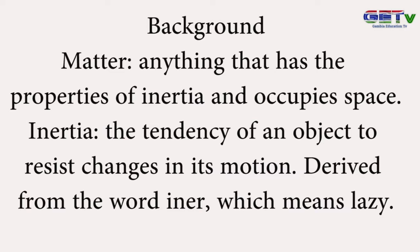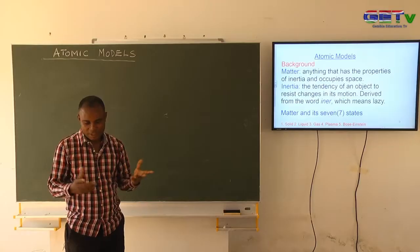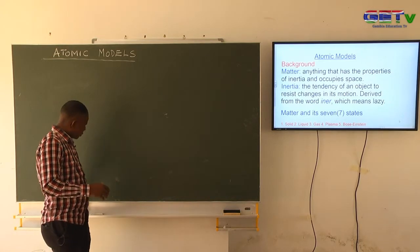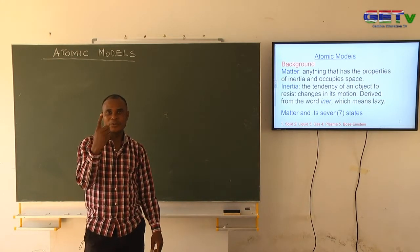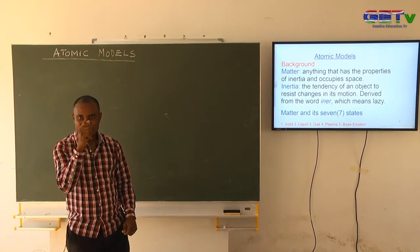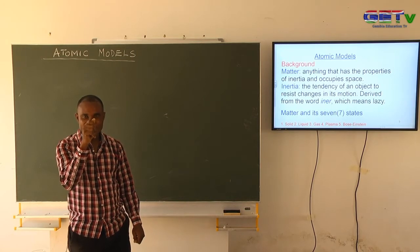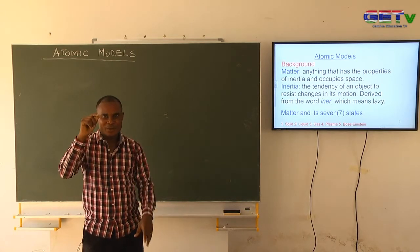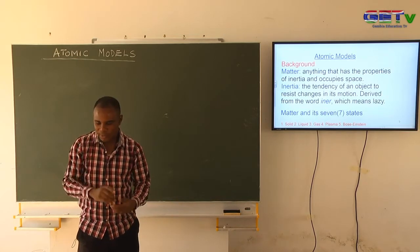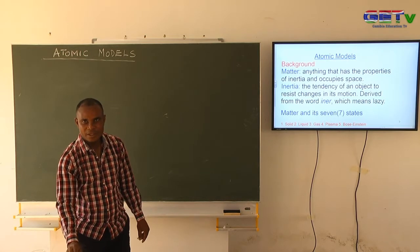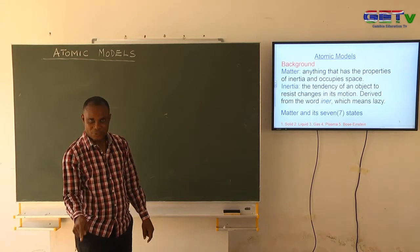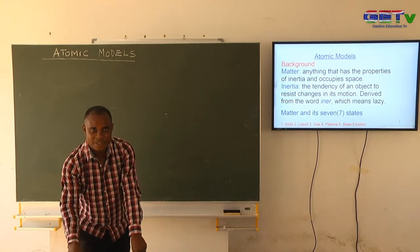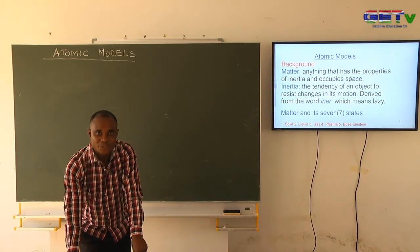Inertia is the tendency of a body to resist change in its motion. For instance, if I throw this chalk, it will continue moving until something stops it — that is its inertia. If I keep this calculator here, it could remain until I decide to take it. That thing stopping it from moving is what is called inertia: the tendency of any object to resist the change in its position or state of motion.